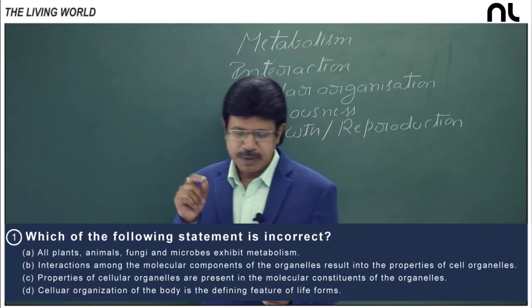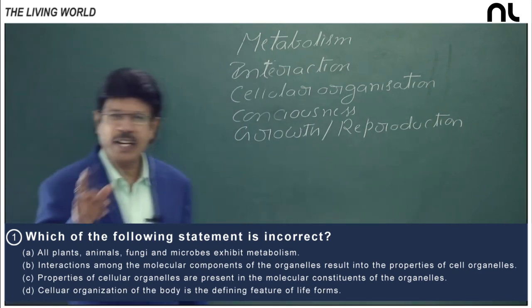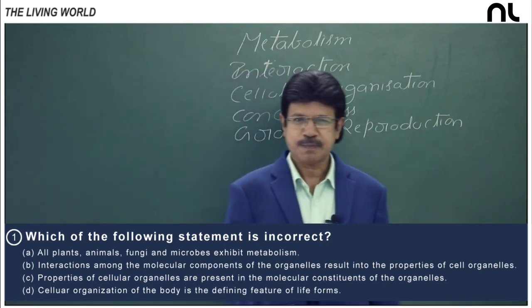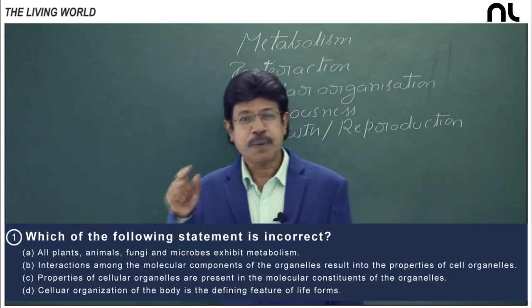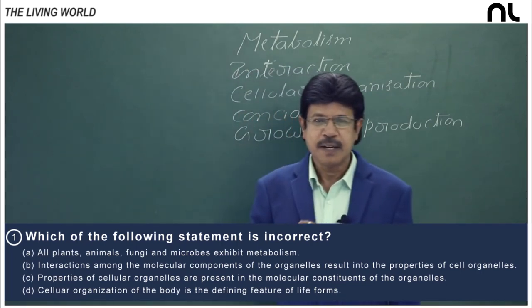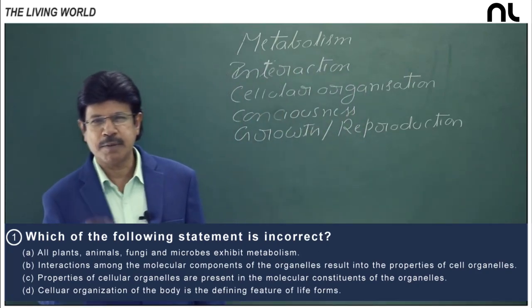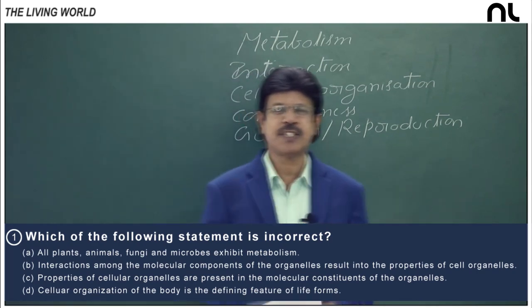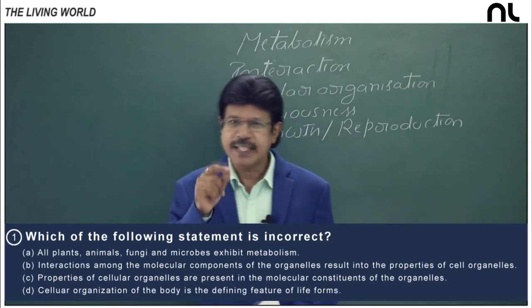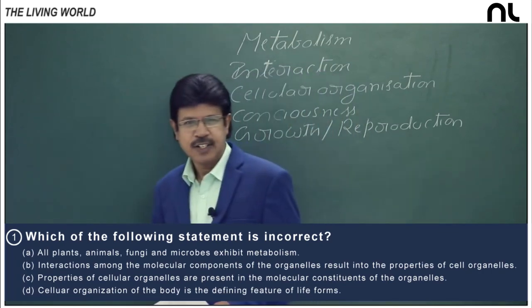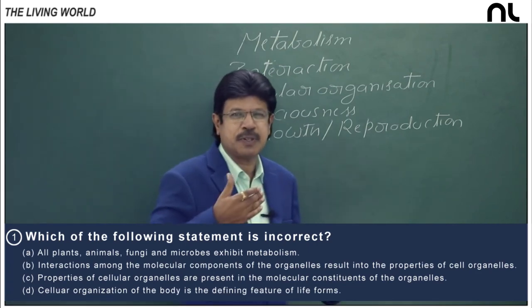In option 2, interaction of the molecular components of the organelle results in properties of the cell organelle. All living phenomena are due to underlying interactions. Such underlying interaction is apparent even in the case of tissues. Properties of tissues do not lie in the constituent cells, but in the interaction among constituent cells. For example, collenchyma has the properties of flexibility and elasticity because of the interaction among cells — cellulose, pectin, and hemicellulose deposited in the corners give these properties. So properties of an organelle do not lie in its molecular components, but in the interaction among molecular components.